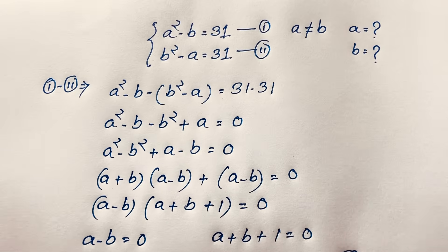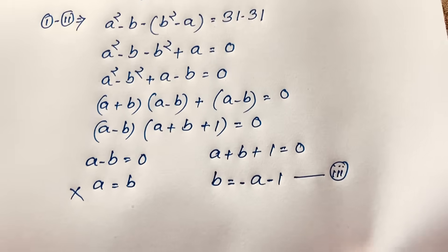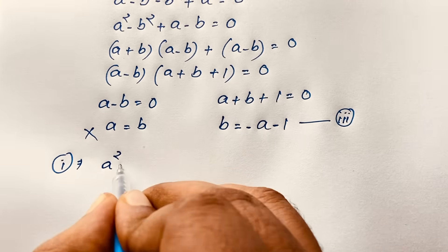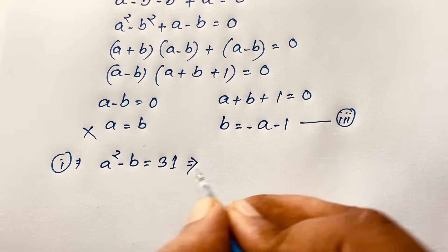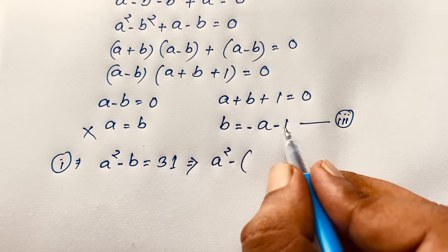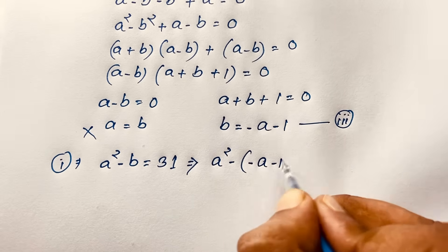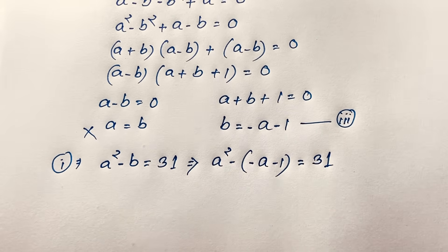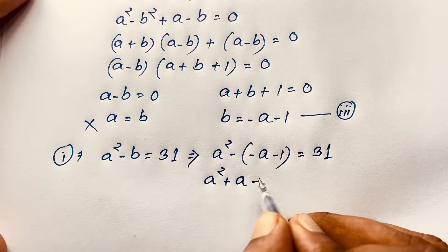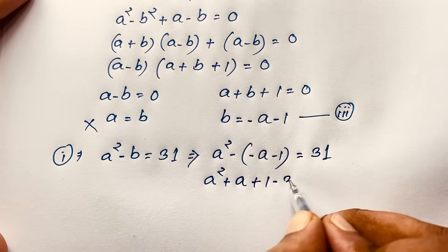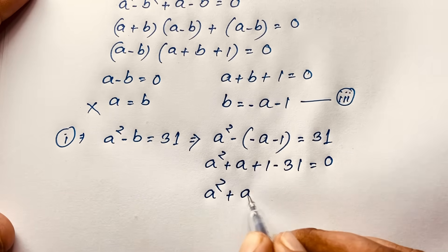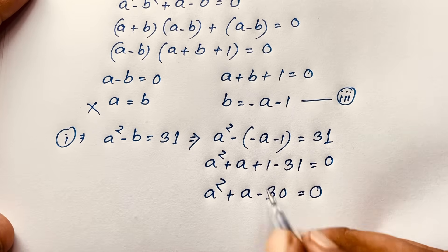Now I take our first equation: A squared minus B equals 31. Remember that B equals minus A minus 1, so I substitute: A squared minus open bracket minus A minus 1 close bracket equals 31. This expression gives A squared plus A plus 1 equals 31. Moving 31 to this side, it will be A squared plus A minus 30 equals 0.